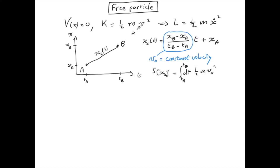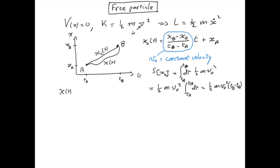We can take all the constants out of the integral, and the integral between t_a and t_b of one is just t_b minus t_a. Now let's consider an arbitrary path x(t) and calculate the average velocity along this path. By definition, this is the time integral of the velocity at each time — the time integral of x-dot of t — divided by the total time, which is t_b minus t_a. When we do the time integral of x-dot, we just get the difference x_b minus x_a, divided by t_b minus t_a.